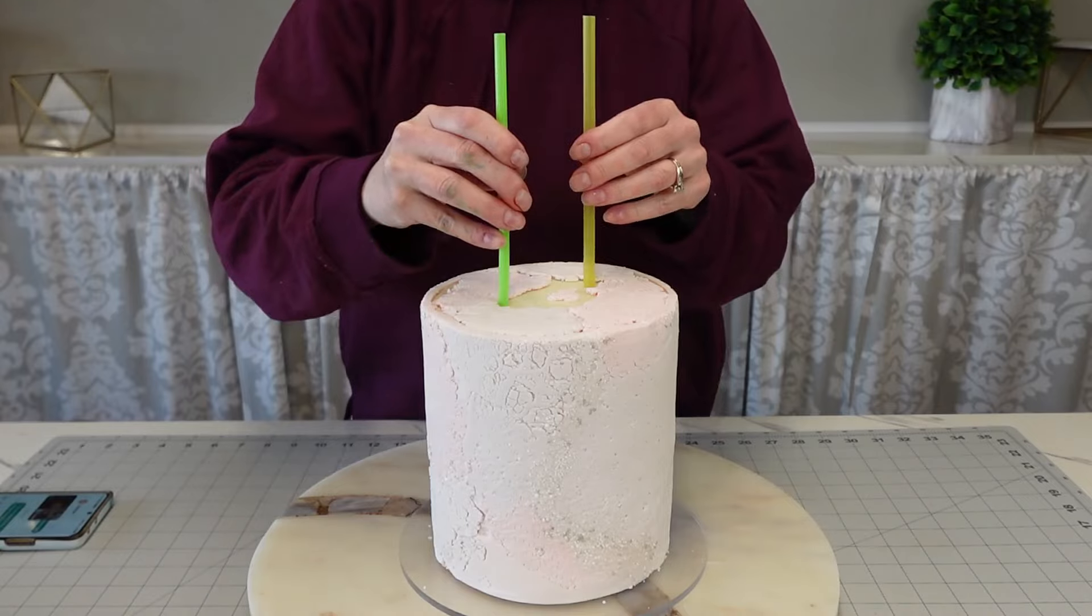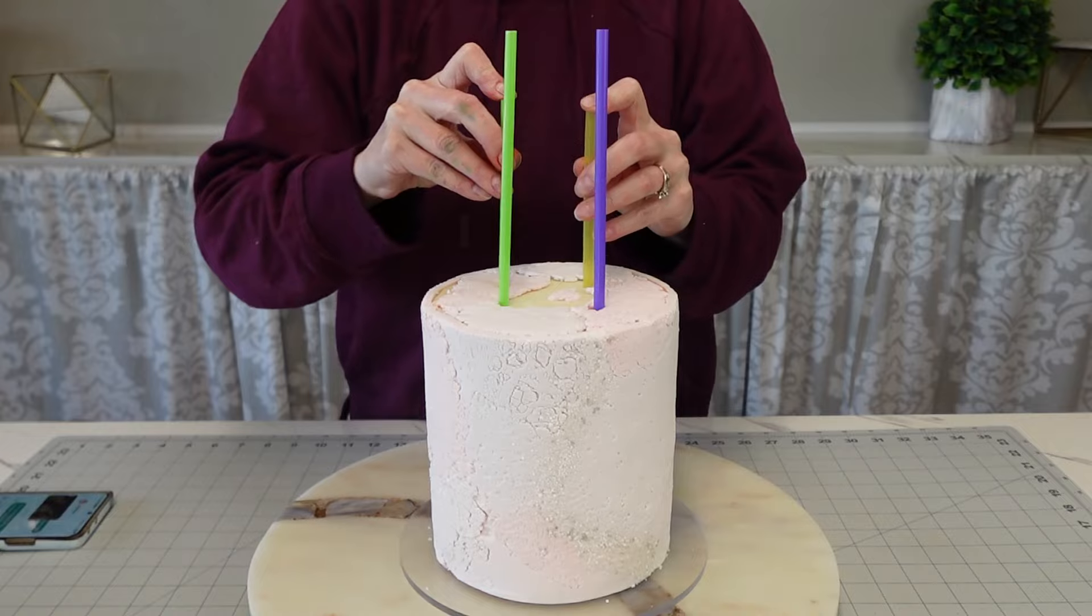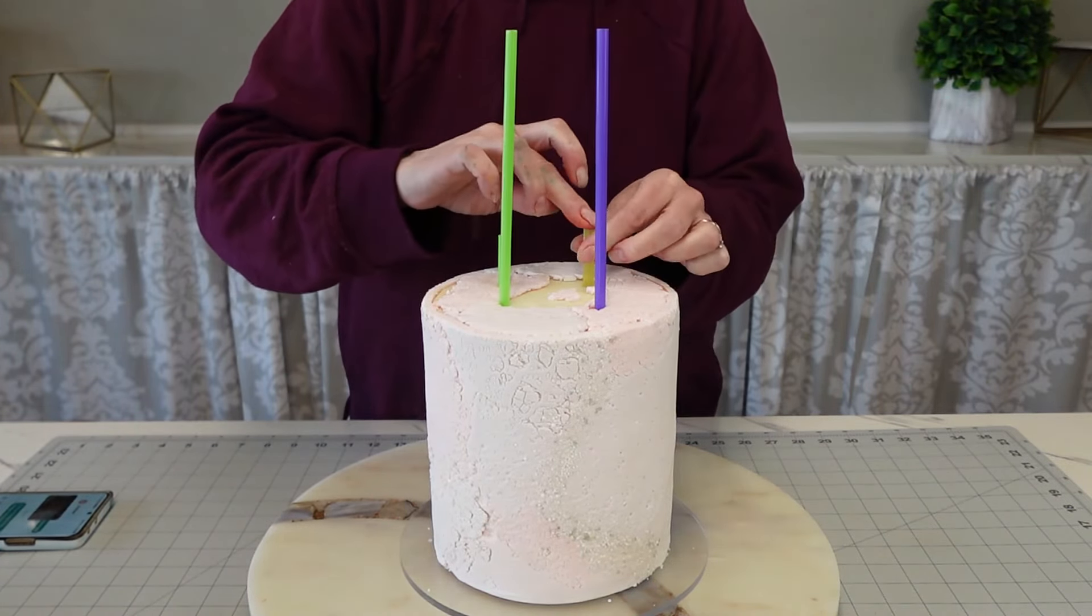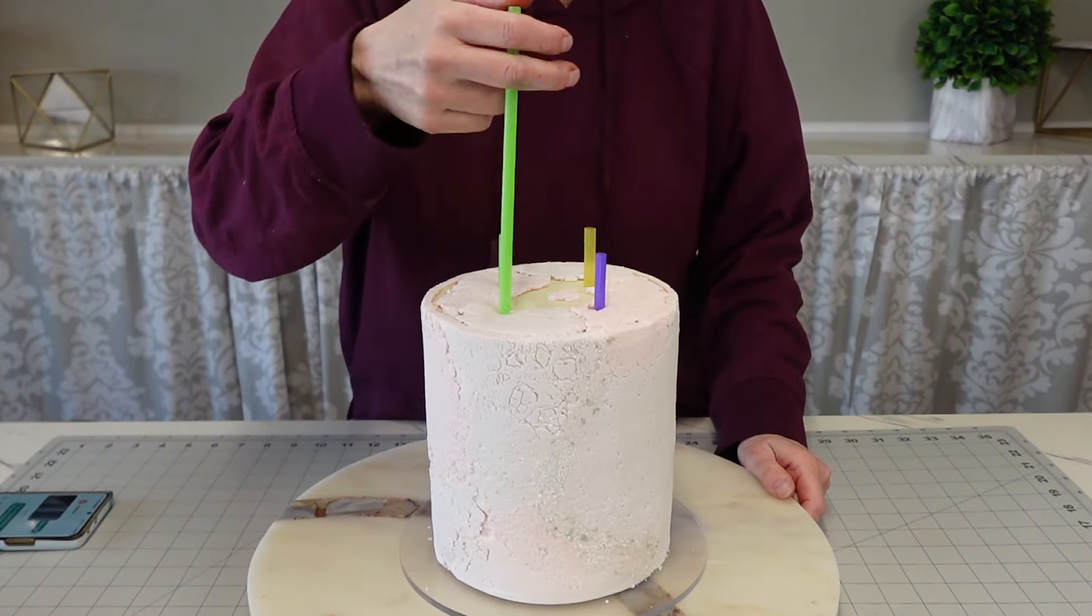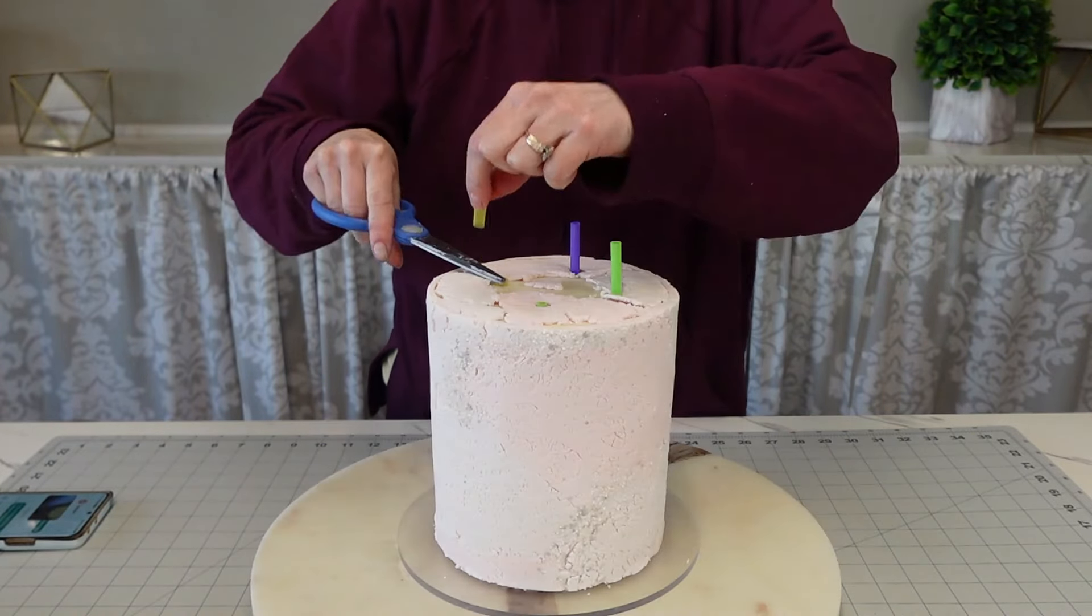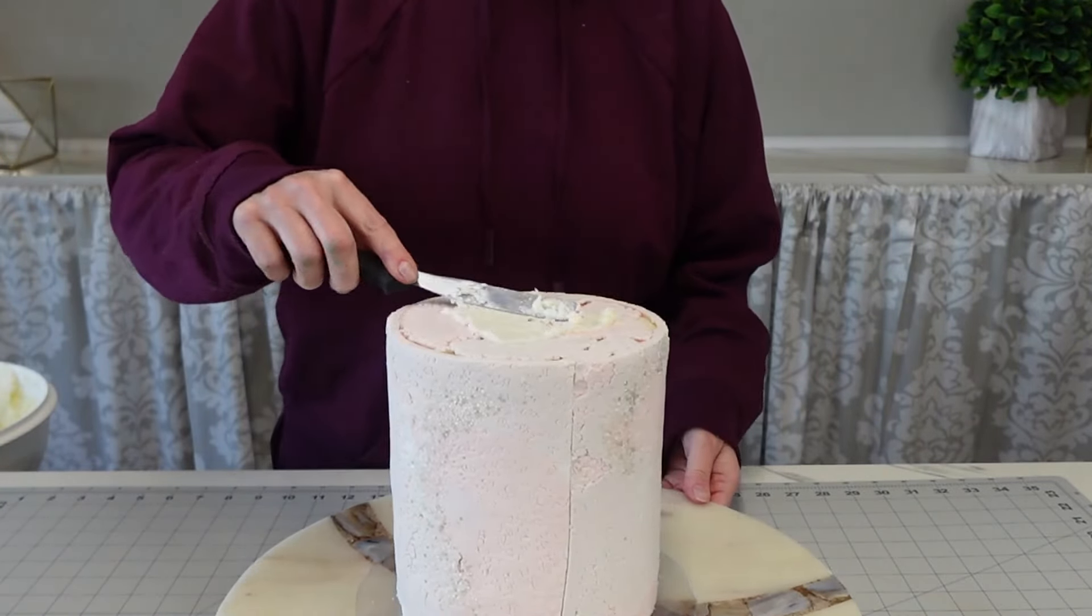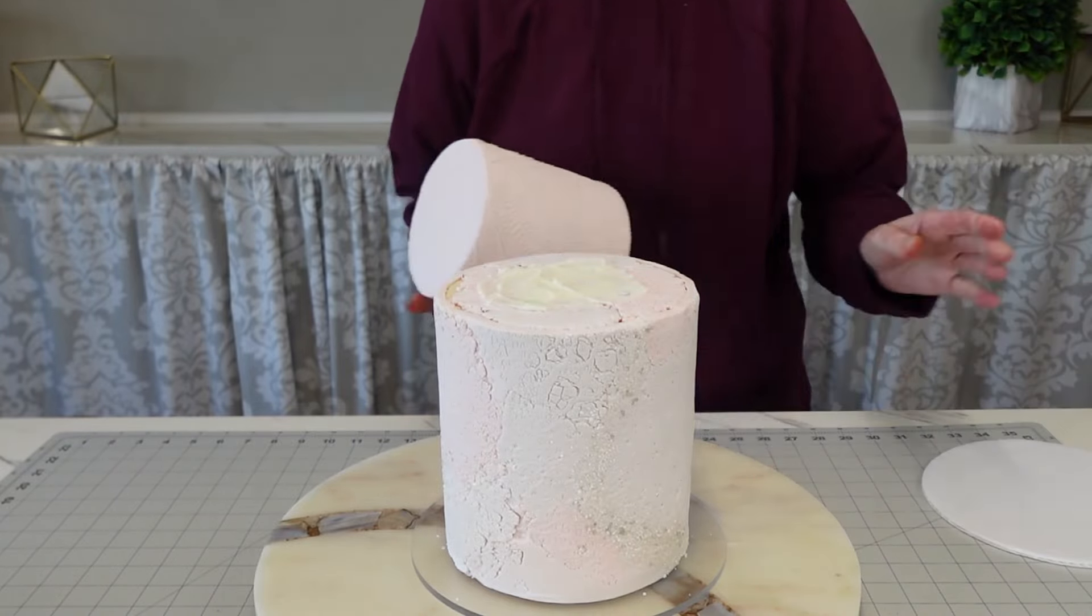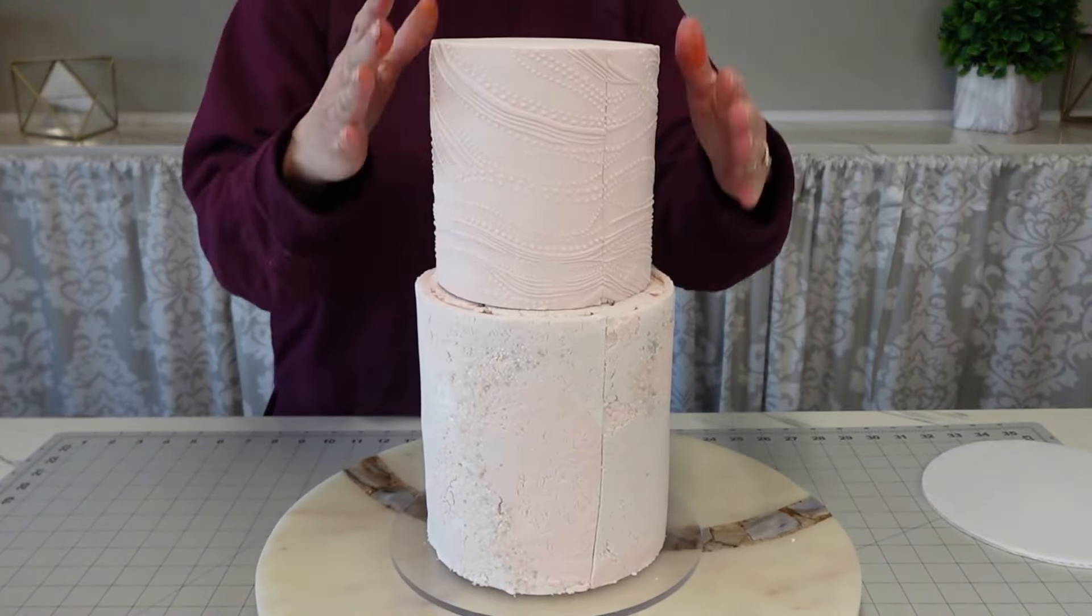I'm just using some straws as my support. Since this is a small tier that's going on top, this is a six inch and a four inch cake, I'm only going to use four straws. You don't really need that much to support that top tier. Now just push them all down, mark where they meet the top of cake and cut them flush and then put a little bit of buttercream on the top to anchor the top tier to the bottom so that it does not slide around. And since this cake had been chilled at this point, I could lift it up with my hands with no problem.